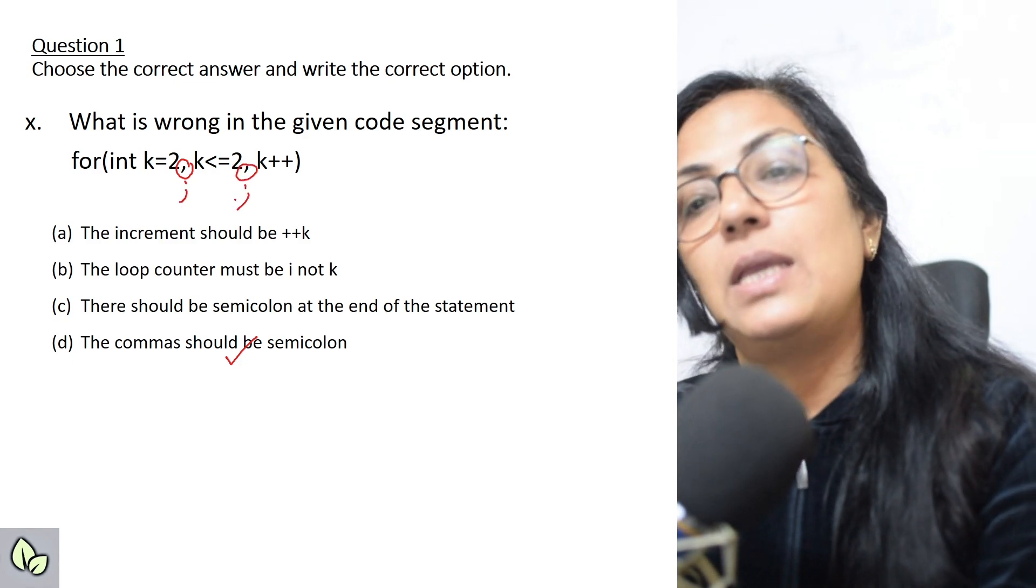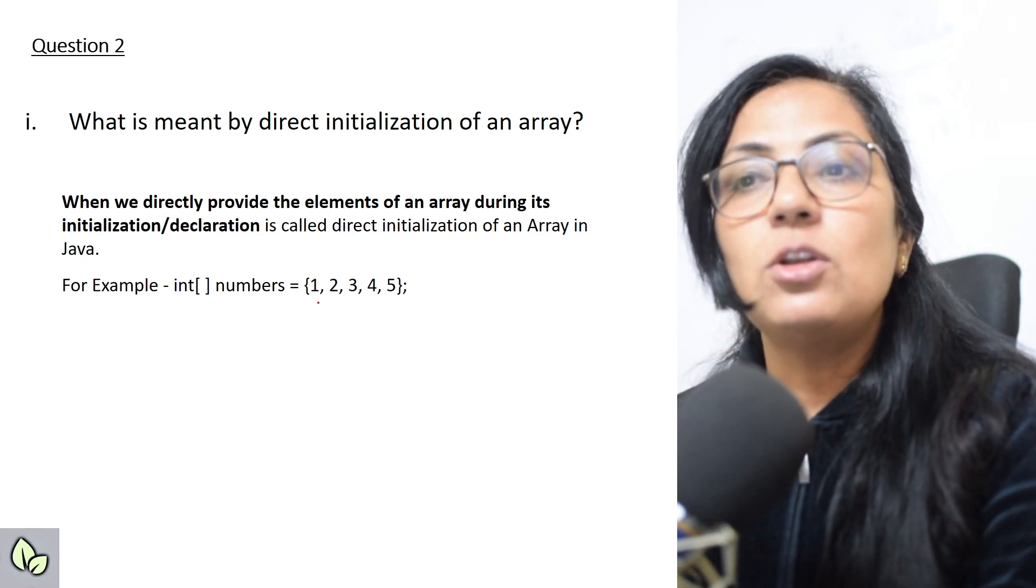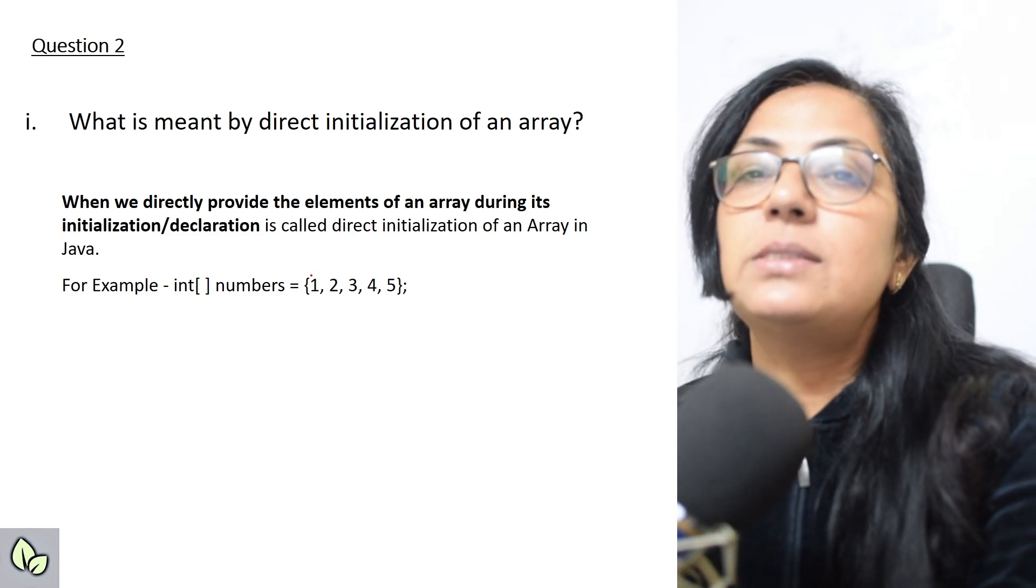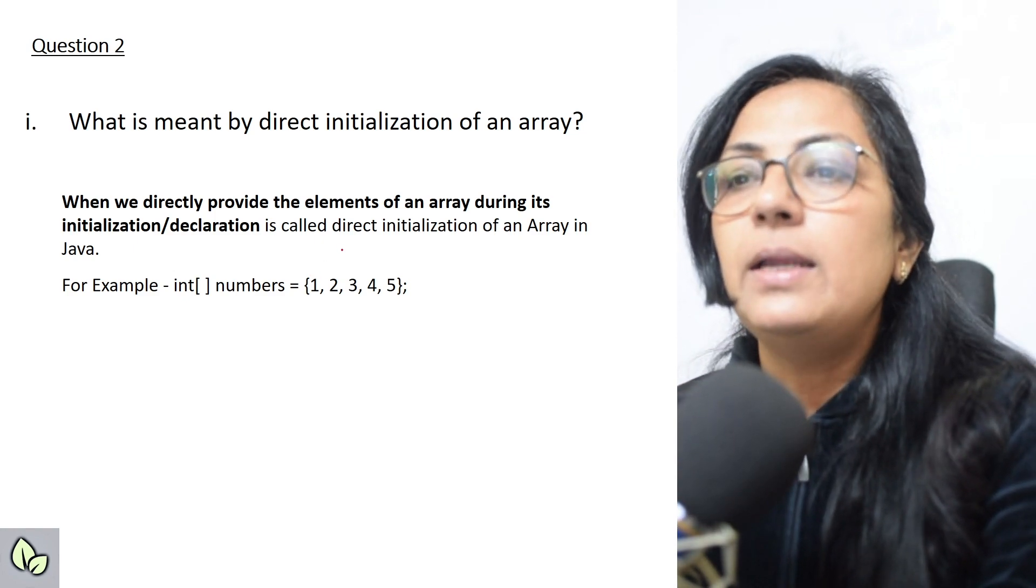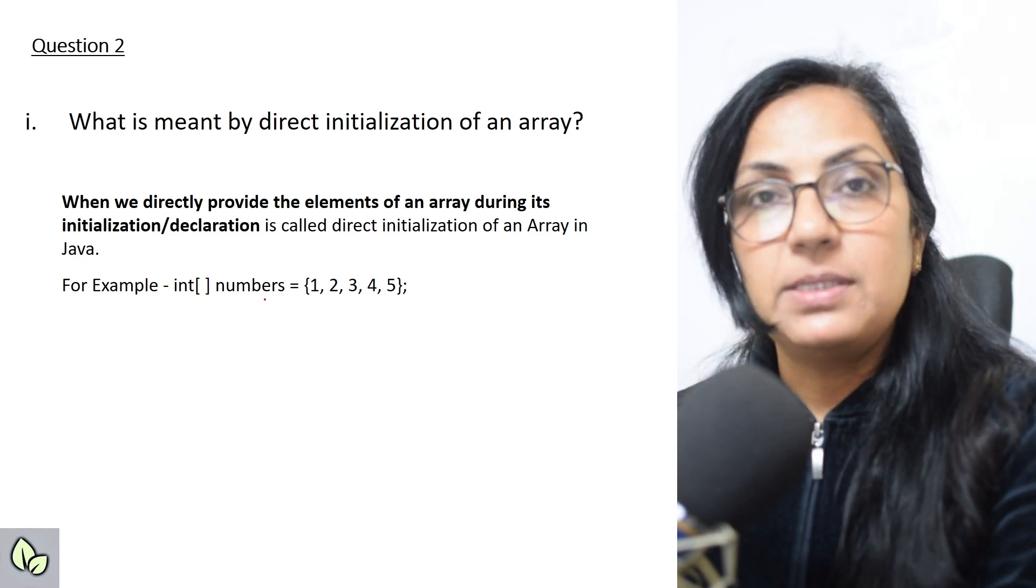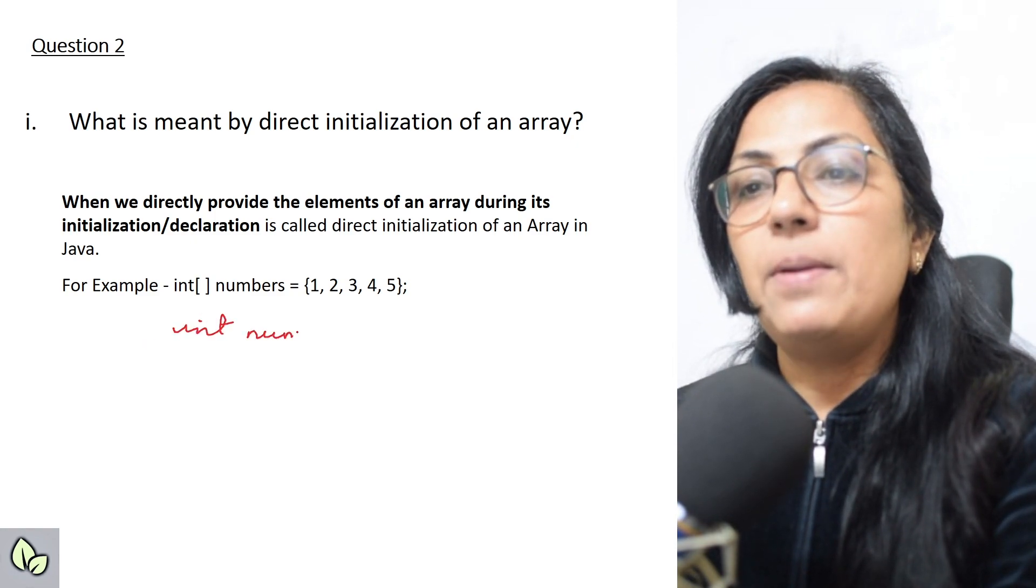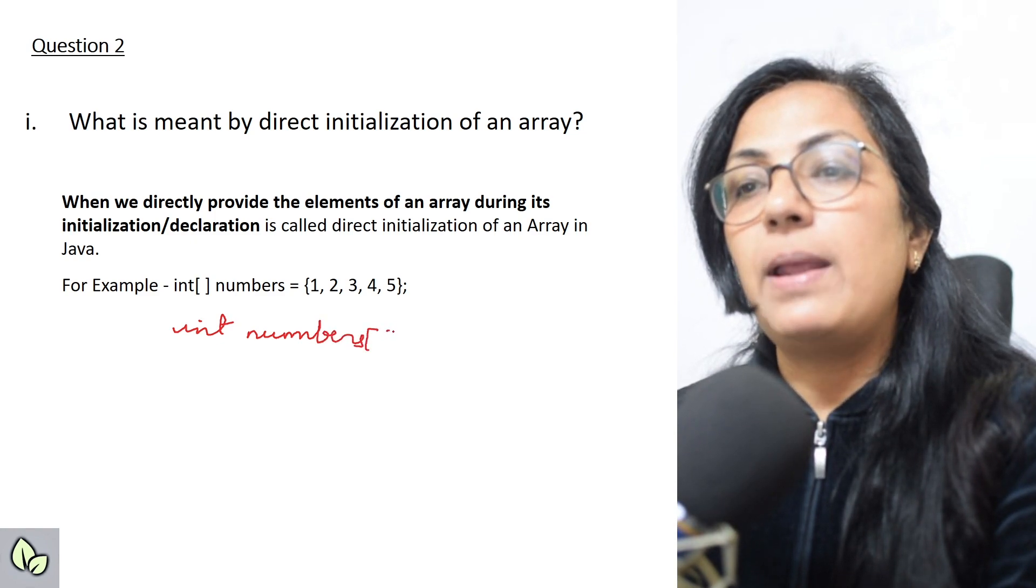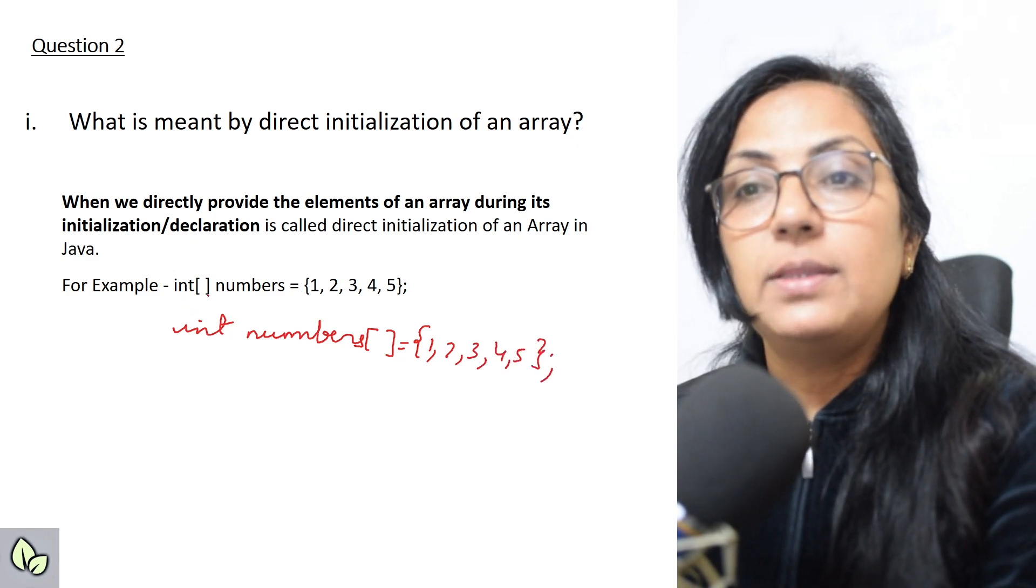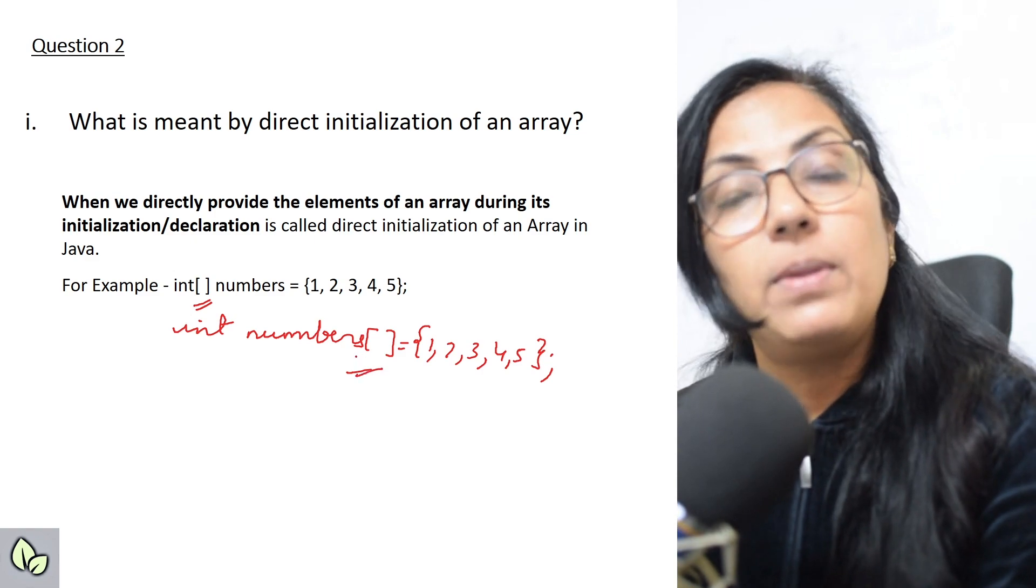I hope all of you have understood these ten MCQs. Now we move on to question number two. What is meant by direct initialization of an array? When we directly provide the elements of the array during its declaration or initialization, all the elements you are giving, it is called direct initialization. Example: int square brackets numbers equals to one two three four five, or this can be written like int numbers and square brackets equals to one two three four five. Please note that the square brackets can be given after the data type or after the variable name, anywhere, both are correct.